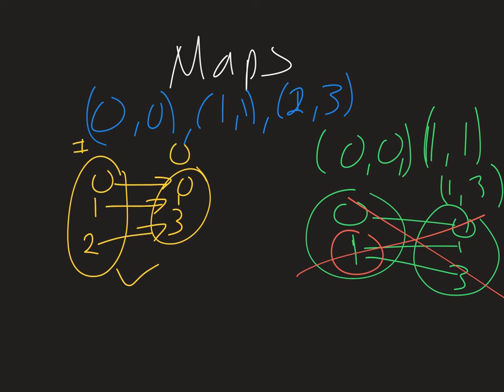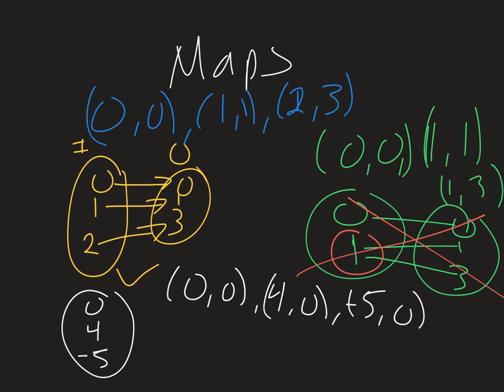Now let's do a different example here. So I've got 0, 0, 4, 0, and negative 5, 0. If I drew my map, I'd have 0, 4, negative 5. And it's going to go over to, well, 0 in my output. Notice all these are going to the same spot. But that's OK because each input here only goes to one output. Therefore, this is a function.